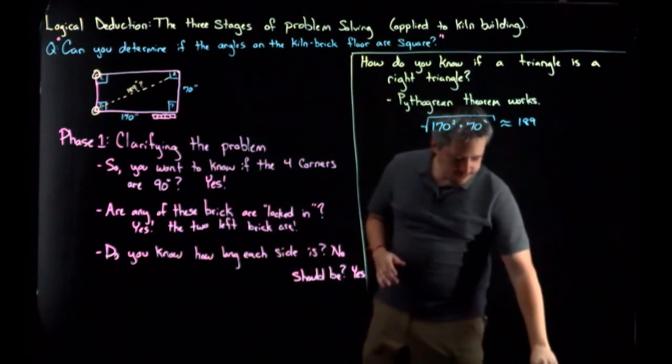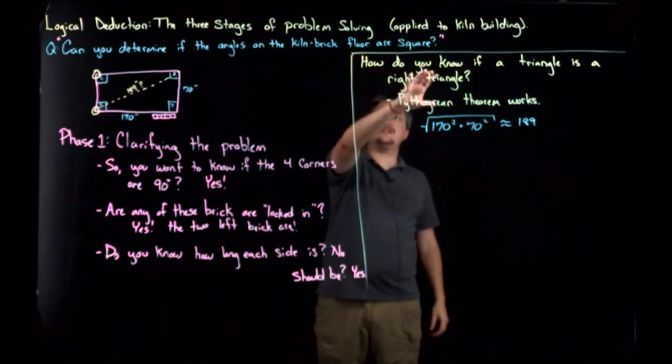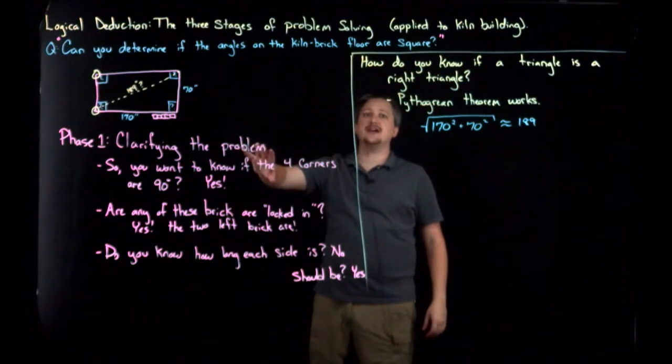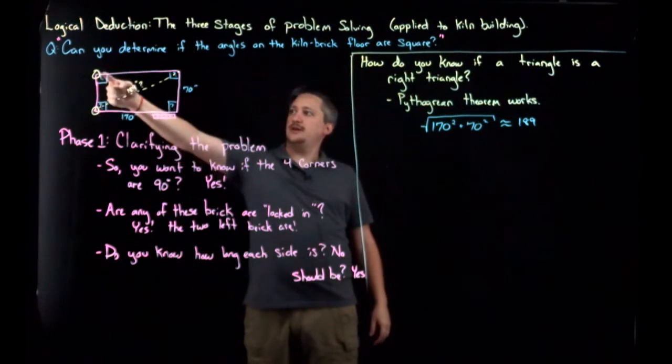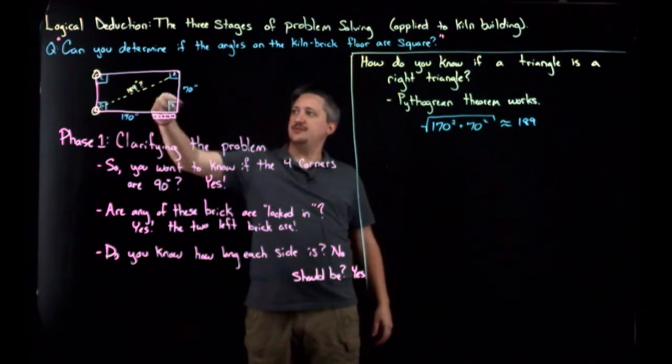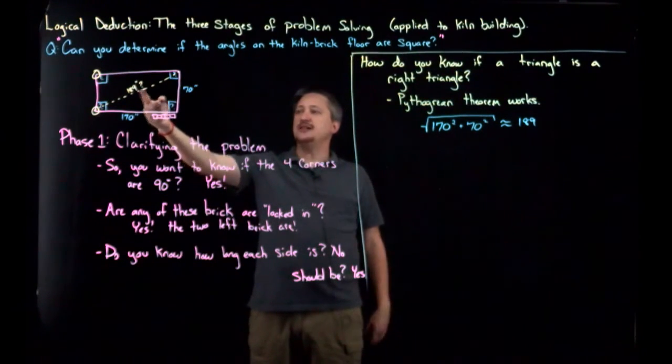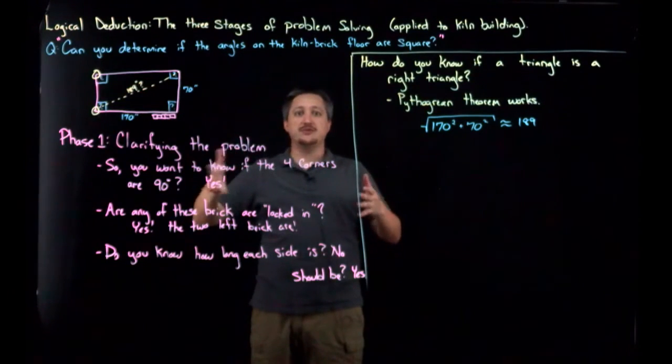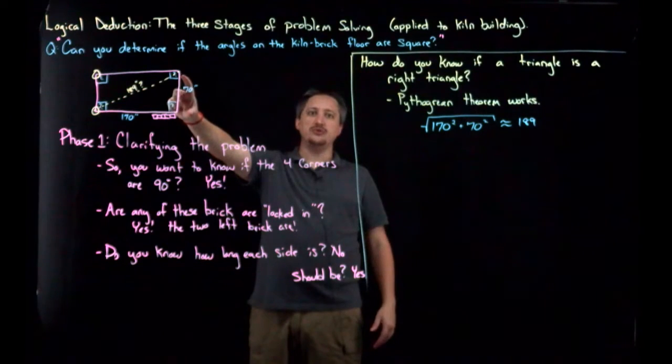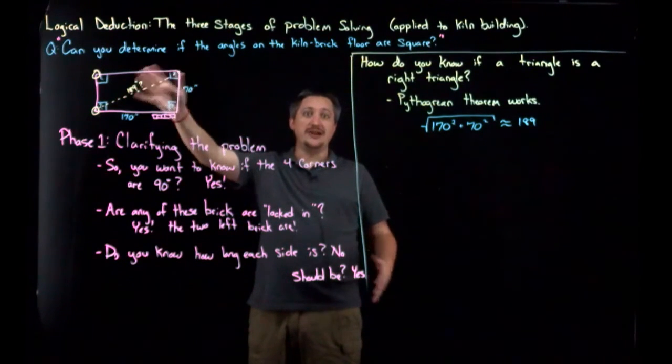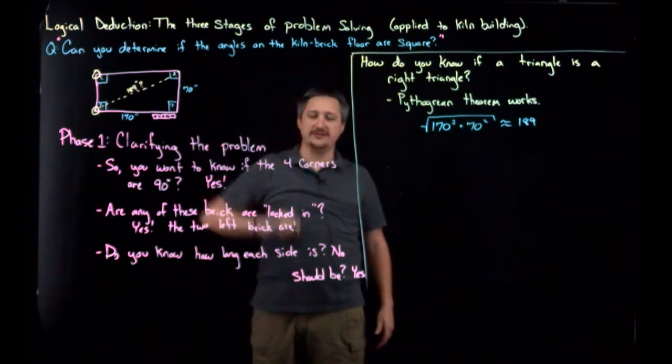But what this tells me is that if the Pythagorean theorem holds, then this side would have to be 189 inches. So, what I actually told her was, can you determine if these things are square? I said, yes, I can. Based on the numbers you gave me, measure from corner to corner to see if it's 189 inches long. If it is, that means it is square. If it's not, that means you need to move these two bricks in order to make it 189 inches while making these lengths still what they need to be, 170 and 70.